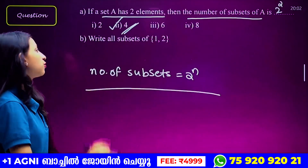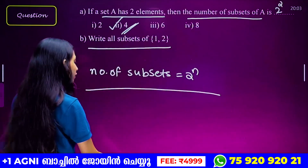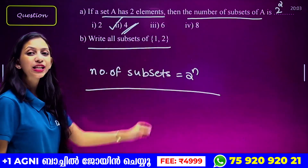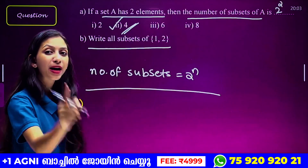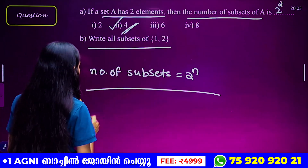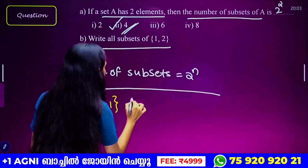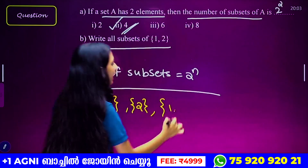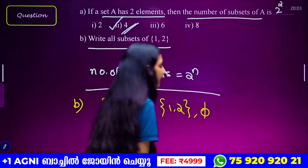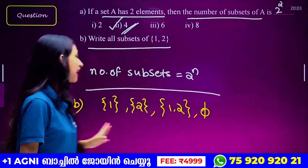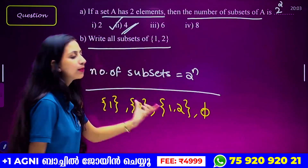What is the number of subsets? 2 raised to 2. We write all subsets of {1, 2}. Set {1}, {2}, and we shall list all subsets. When we select the first tool, we will select one set: set {1}, then set {2}. Every set is a subset of itself. Empty set is a subset of every set. So we have a collection of subsets of {1, 2}.